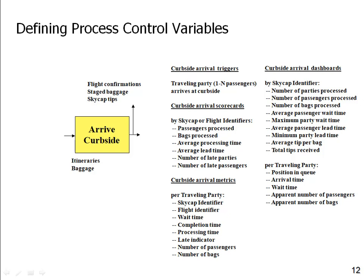That's a lot of data. The purpose of defining process control variables isn't to draw the second process map — it's to define all these variables. The fact that I have the 'arrive curbside' process defined in my requirements document means I should also be defining all these other variables and discussing how I'll control the process. If you do this well, you'll often find potential problems in the process map. For instance, if my scorecard includes the number of late parties and passengers, that presumes the skycap has access to departure schedules — and I had missed that as an input to the process. Defining the metrics, dashboards, and scorecards reveals what's missing.